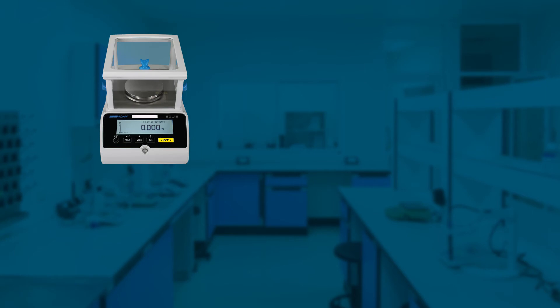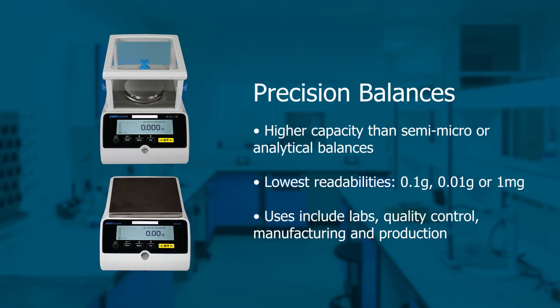Precision balances, which are often also referred to as top-loading balances, usually have a higher capacity than analytical and semi-microanalytical balances, meaning they can weigh larger size loads at one time. However, there's a trade-off with the precision readability.